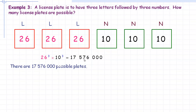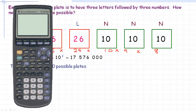Now if you wanted all the letters to be different, you would start with 26 for the first letter, then 25 for the second since you can't reuse it, then 24 for the third. If you also wanted all the numbers to be different, you'd put 10, then 9, then 8. So that would be 26 × 25 × 24 × 10 × 9 × 8, which still gives 11,232,000 different license plates under that restriction.